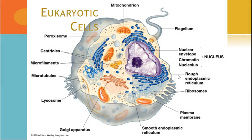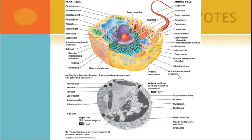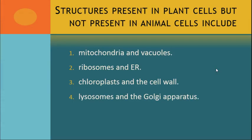So eukaryotic cells — you're looking at an animal cell here, which you've probably seen before. We're going to talk about each of these things. Here's an example of a plant cell versus an animal cell, because they are different in some respects and the same in others. Structures present in plant cells but not animal cells include chloroplasts and the cell wall. Plant cells also have membrane-bound organelles, ribosomes, and the ER, while animal cells lack chloroplasts and the cell wall.